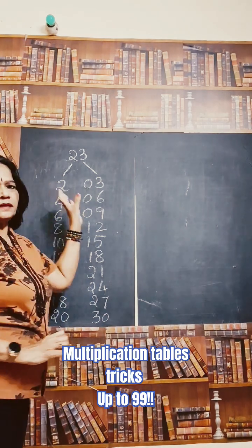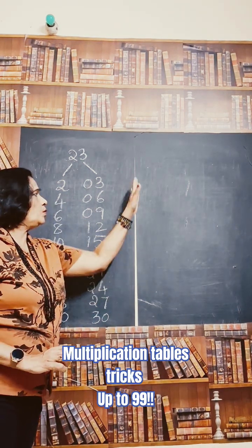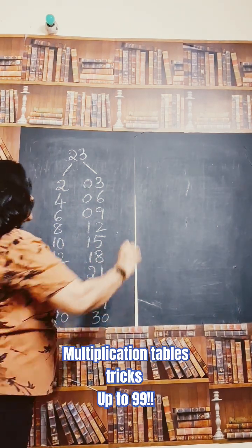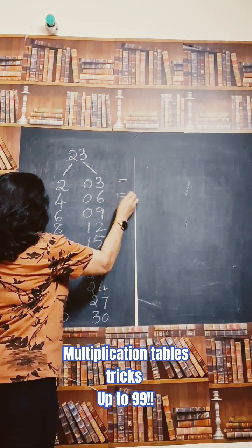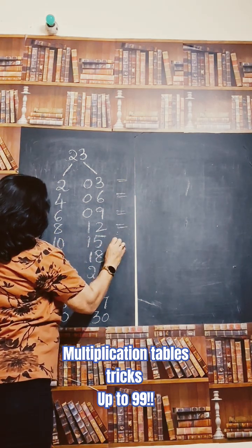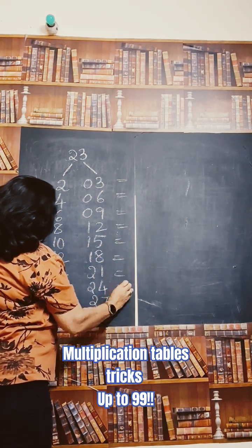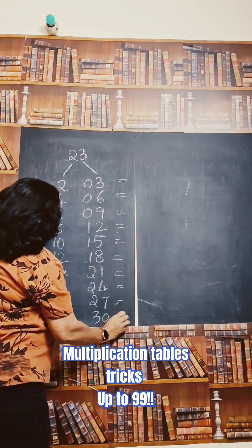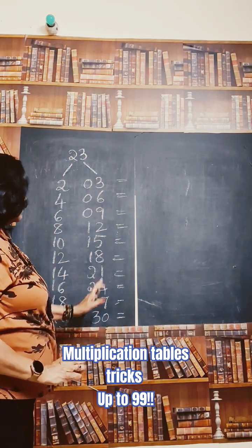So 2 tables and 3 tables. For the tables I repeat, how to write now 23 tables. Just I will put the equals here. Okay. To write the tables, 23. First what we should do,